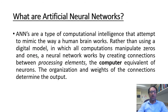So what are artificial neural networks? ANNs are a type of computational intelligence network that attempt to mimic the way a human brain works. Rather than using a digital model in which all computations manipulate 0s and 1s, a neural network works by creating connections between processing elements — the computer equivalent of neurons.